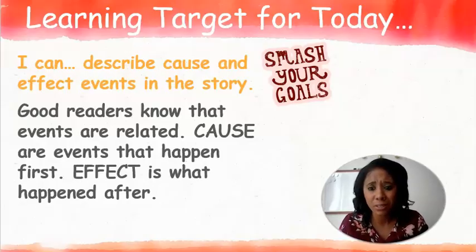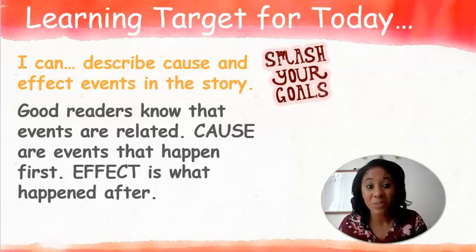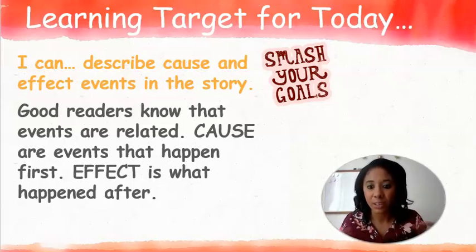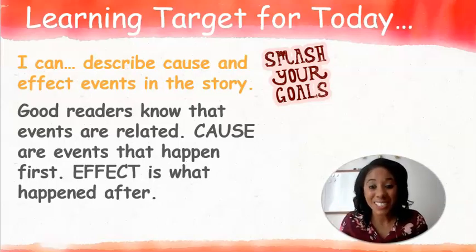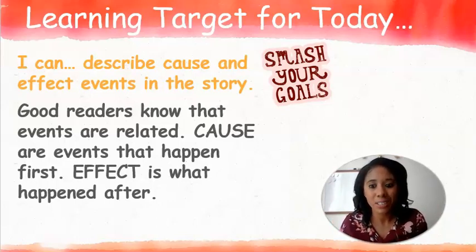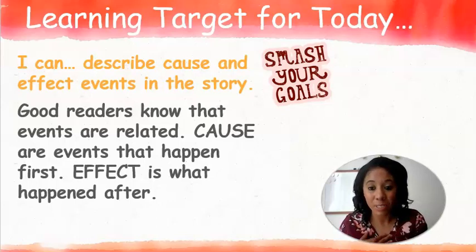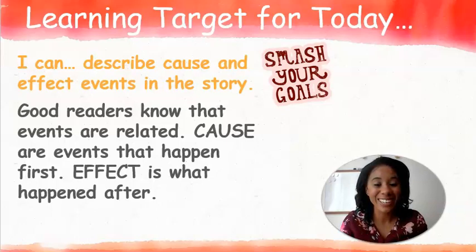Now that you have your materials for today, let's get started into what we're going to be doing. Today you guys are going to describe cause and effect events in the story. Good readers know that events in a story are related or connected to each other. The cause is the event that happens first, and the effect is what happens after. Today I have two examples — the first one Ms. Finney is going to show you, and the second one you guys are going to get a chance to try on your own.